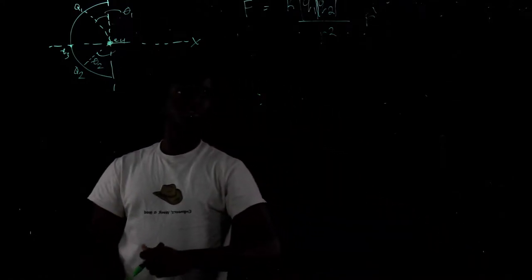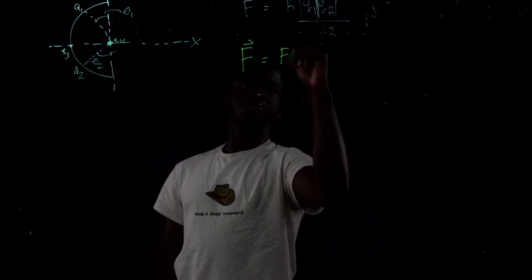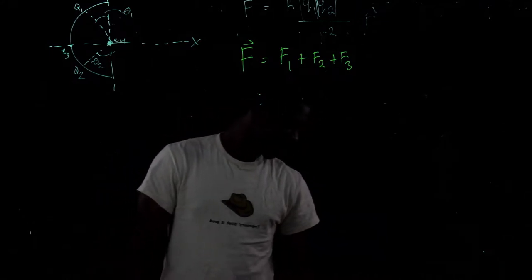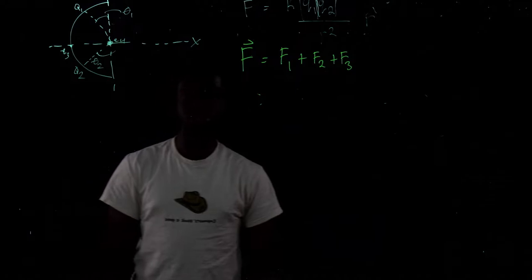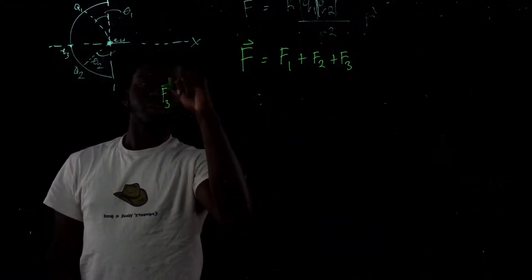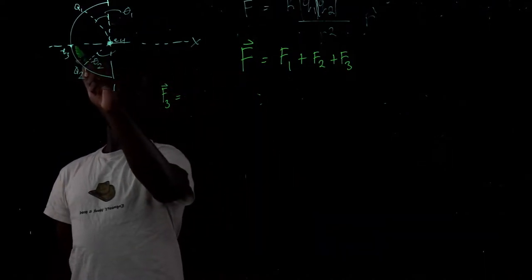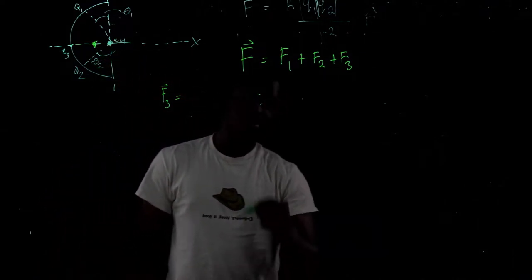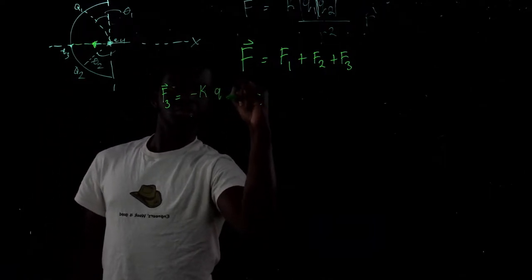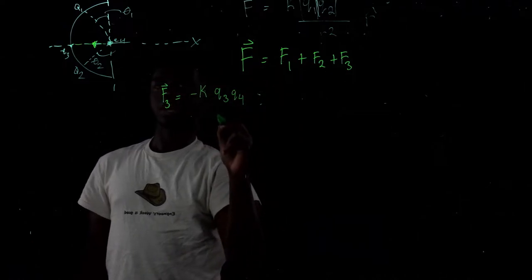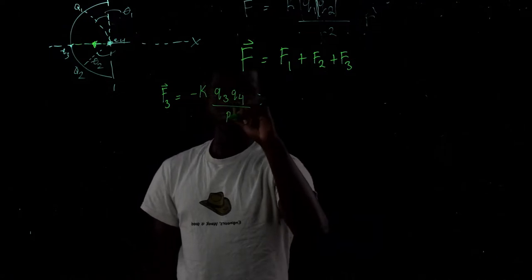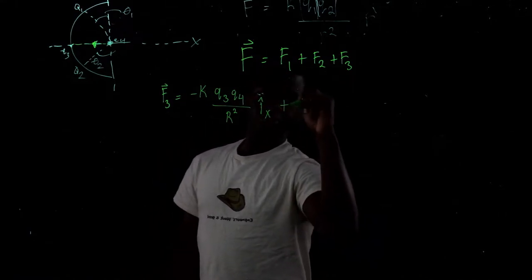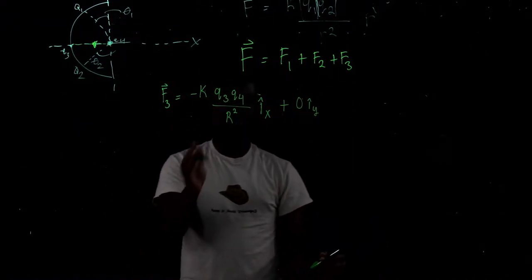Starting with the easiest one, negative q3: the force is attractive, so it's going in the negative x-direction. F3 equals negative k times q3 times q4 over r squared in the i-hat x direction, with zero in the y direction.